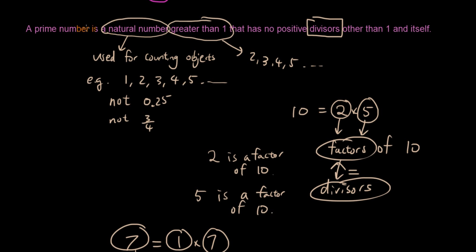Okay, a prime number is a natural number. So 7 is a natural number greater than 1. Yes, 7 is greater than 1. That has no positive divisors other than 1 and itself. So 7 times 1 is 7. And that's it. There's no other, no 2 other numbers that multiply together to give you 7. So 7 is a prime number.